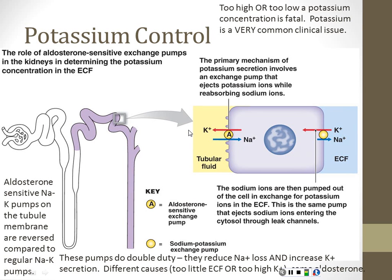Sodium retention and potassium excretion are controllable by controlling the number of these pumps that are functioning in this part of the nephron. They do both things: they reduce sodium loss and they increase potassium secretion.